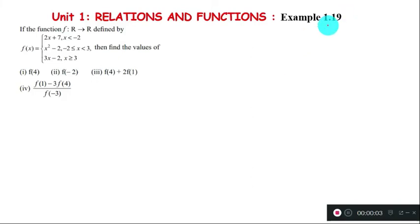Assalamu alaikum students. Example 1.19: If the function f from real numbers to real numbers is defined by f(x) equals 2x+7 for x less than -2, x²-2 for -2 less than or equal to x less than 3, and 3x-2 for x greater than or equal to 3, then find the values of: